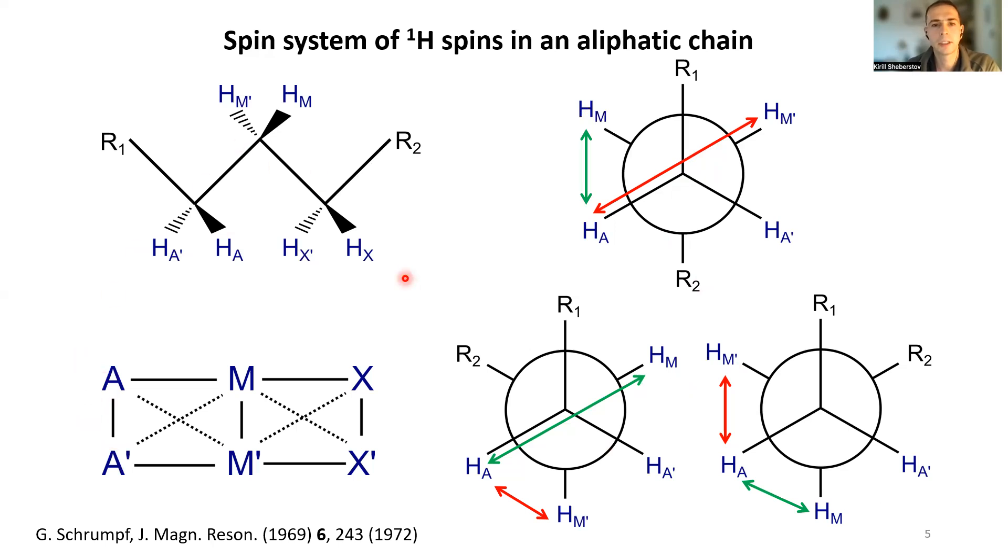For three CH2 groups, you would denote this in spin system as AA' MM' XX' prime.